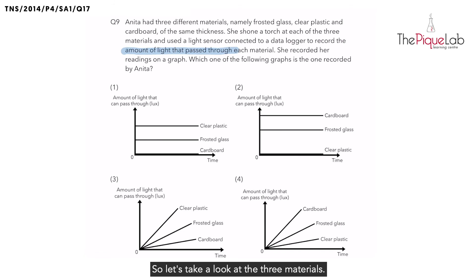Let's take a look at the three materials: frosted glass, clear plastic, and cardboard. What can you tell me about the transparency of frosted glass? We can say that frosted glass is translucent. What about clear plastic? Clear plastic is transparent. And finally, cardboard is opaque.